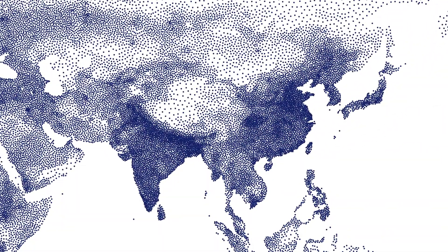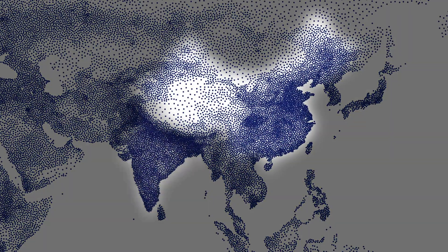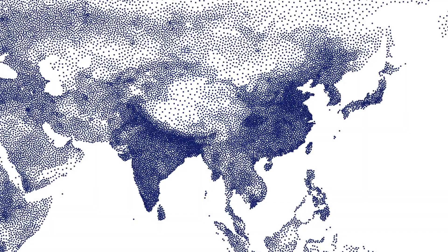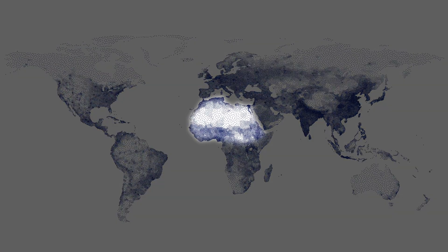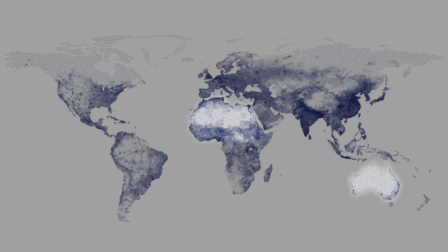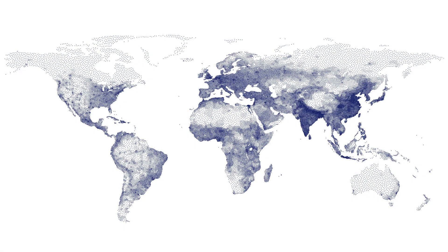It's no surprise that China and India stood out to us from the beginning. These two countries are some of the most densely populated and are the world's only two countries with over a billion people. We noted that North Africa and Australia were sparsely populated. But why? Well, to answer that, we may need to take a look at another map.